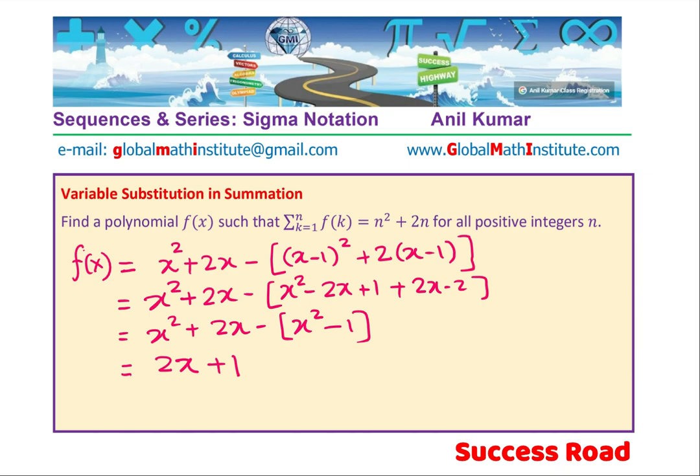So we get our function f(x) equals 2x + 1, perfect? So our answer is that the function f(x) is equal to 2x + 1.